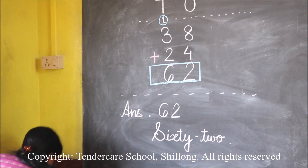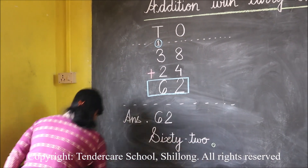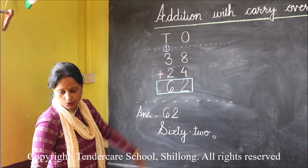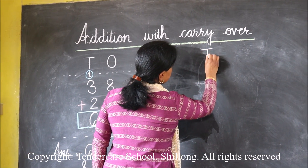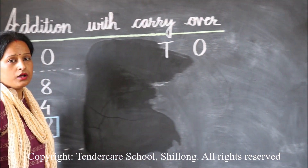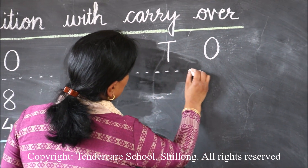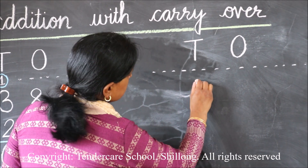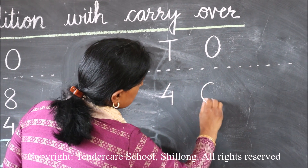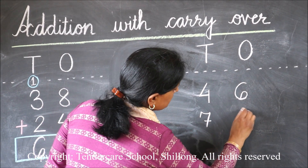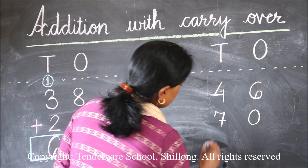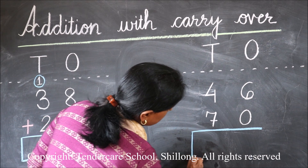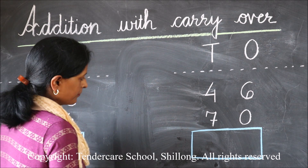So I hope you have understood how to do addition with carryover. Now let us see another sum — the same thing, addition with carryover. Let me write down T and O first. T for tens and O for ones, and then a dotted line. You know now why I am putting this dotted line — you need to write the carryover number there. Now let the first number be 46 and the next number be 70. Let me make the blue box and put the addition sign.